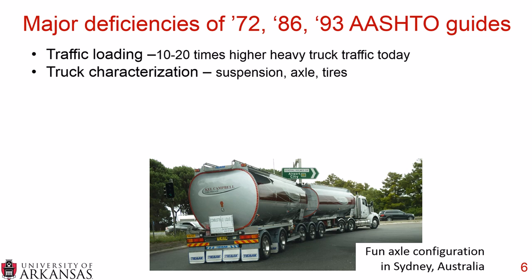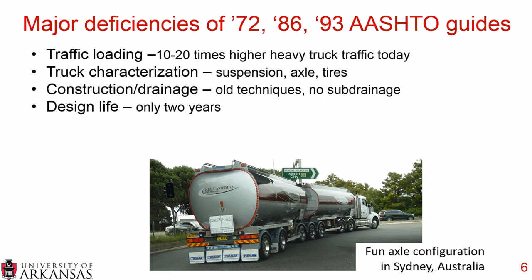Some other deficiencies include truck traffic loading. Traffic loading today is 10 to 20 times higher than it was in the 50s and 60s when the AASHTO road test was executed. There are a whole host of new truck characterizations, including suspensions, axles, and tires. As far as construction and drainage goes, they used very old construction techniques, there was no sub-drainage, and now we recognize drainage is a very important part of any successful pavement structure. The design life of the pavement was only two years — now we try to design roads for 20, 30, or even 50 years.